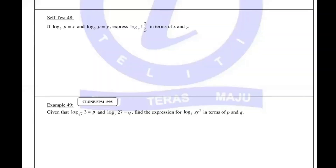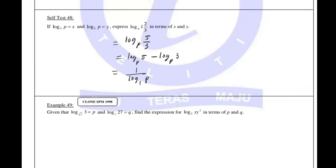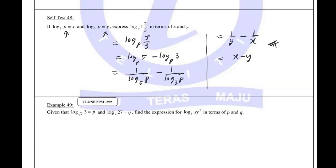For the next one, we break it up first because the two bases are different — one is base 3, one is base 5, and this is base p. Change the mixed number to improper fraction: 5 over 3. Step 2: break it up to log base p of 5 minus log base p of 3. Then change each using the reciprocal formula to 1 over log base 5 of p minus 1 over log base 3 of p. Log base 5 of p is y, log base 3 of p is x. So the answer is 1/y minus 1/x, which is (x minus y) over xy.